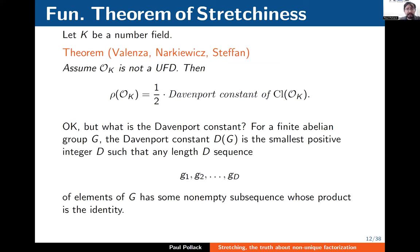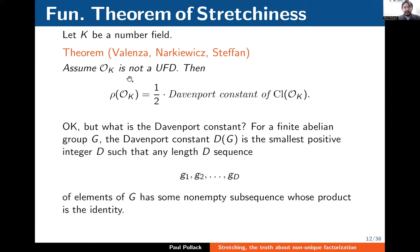The main theorem I want to advertise answers this question. The results were assembled over a number of years. The first paper on this subject may have been by Valenza, though it appeared in 1990 despite being submitted in 1980 — somehow it took 10 years to appear, and there has to be a story I don't know. But it was worth the wait. The theorem: let K be a number field, and assume the ring of integers is not a UFD. Then the elasticity equals half the Davenport constant of the class group.